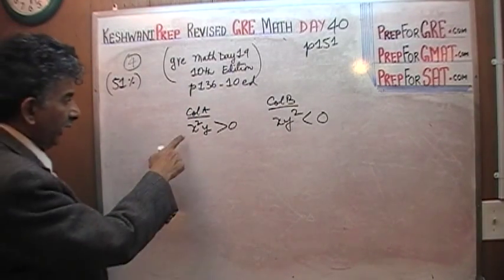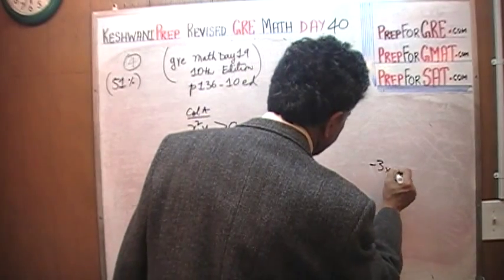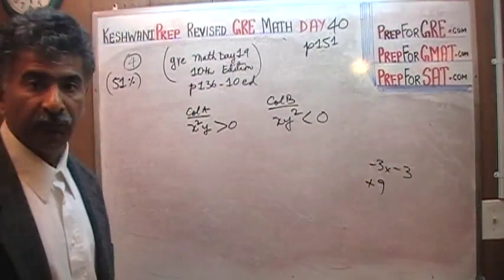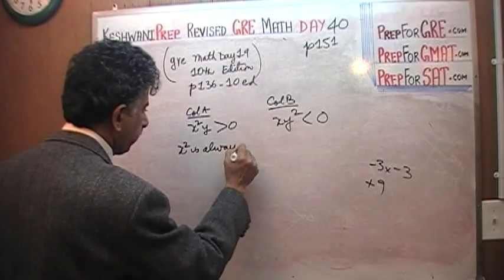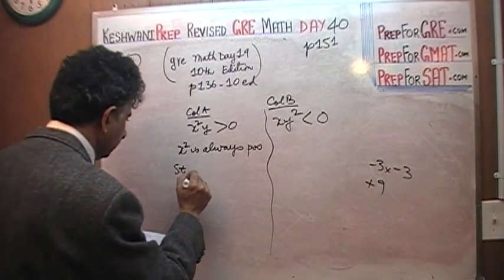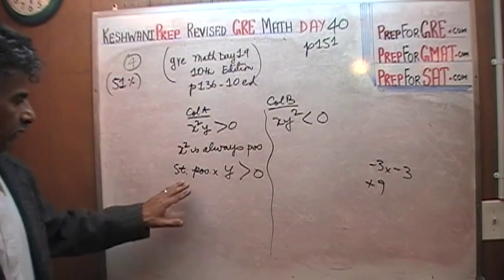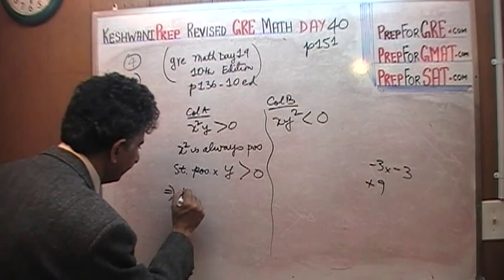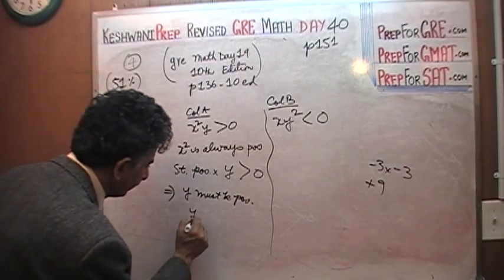Here is the solution. X squared — the square of any quantity — is always positive, no matter whether the quantity is a fraction, positive, or negative. For example, negative 3 times negative 3 equals positive 9, because negative times negative is positive. So x squared is always positive. If something positive times y is positive, that implies that y must be positive — in other words, y is greater than zero.